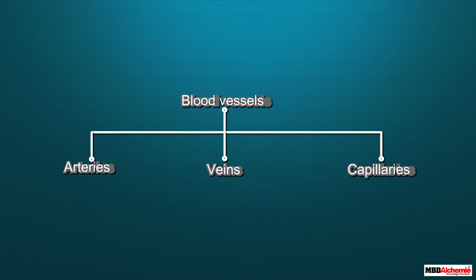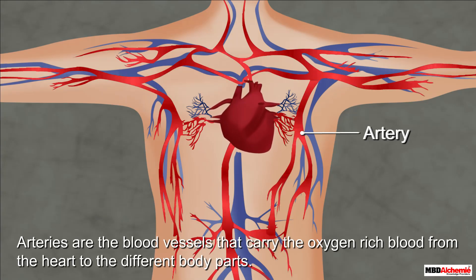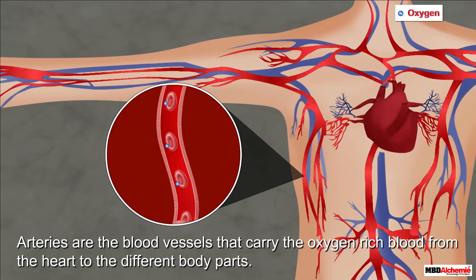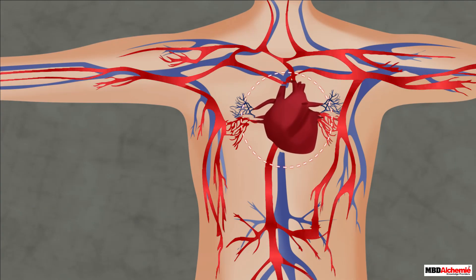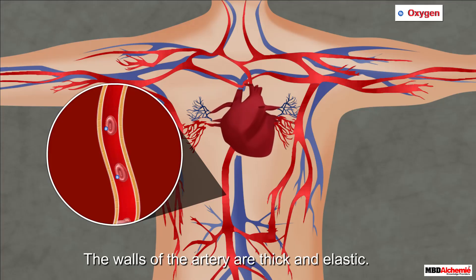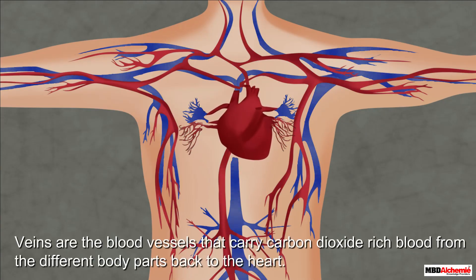The first type of blood vessel is the artery. Arteries are the blood vessels that carry oxygen-rich blood from the heart to the different body parts. The arteries receive blood directly from the heart, so the blood flows at a fast pace. In order to withstand this high speed, the walls of the arteries are thick and elastic.